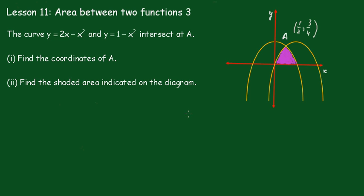Now we need to find the shaded area indicated on the diagram. To do that, we first find where each curve meets the x-axis. Taking y equals 2x minus x squared and factoring out x, we get x(2 minus x) equals 0, giving x equals 0 and x equals 2.